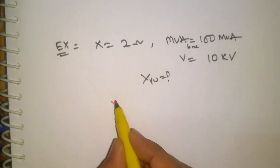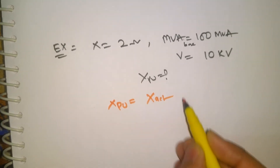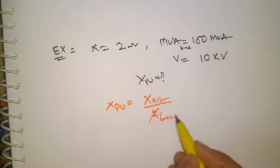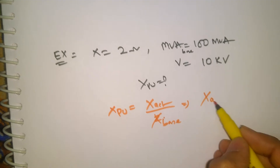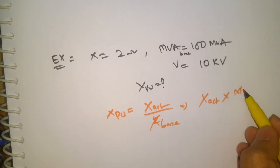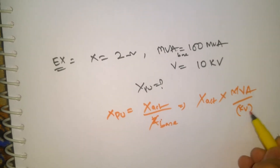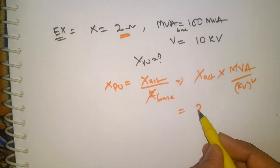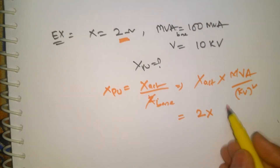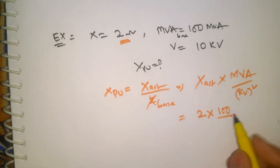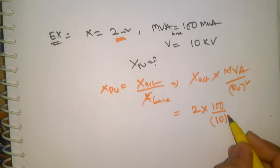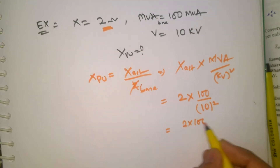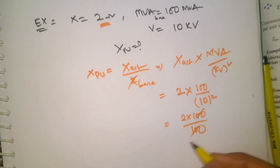As explained, X per unit equals X actual divided by X base, and X base equals KV squared divided by MVA. So X per unit equals X actual times MVA divided by KV squared. For example, X actual is 2 ohms, MVA is 100, KV is 10. So: 2 times 100 divided by 10 squared equals 2 times 100 divided by 100.